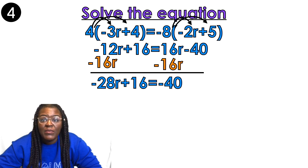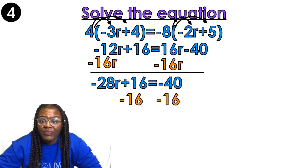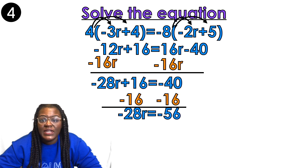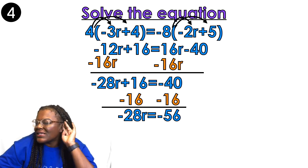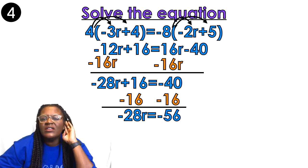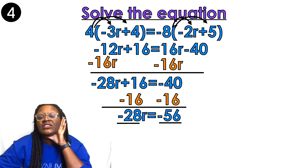Now all I have to do is move the constant and divide by the coefficient — I'm back to a two-step equation. The constant is 16, so minus 16 on both sides, leaving negative 28r equals negative 56. Last step is to divide by the coefficient, which is negative 28. So r equals 2.